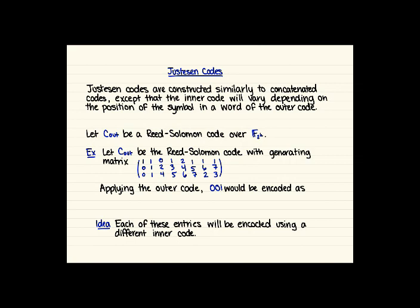So for Justesen codes, our outer code is always going to be a Reed-Solomon code, and it's always going to be over a finite field with 2 to the k elements. So for example, we can look at over F8, this Reed-Solomon code we've been working with a lot. So we've got that Reed-Solomon code, and applying the outer code 001 should be encoded as that bottom row there: 0, 1, 4, 5, 6, 7, 2, 3.